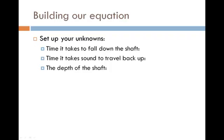Now that we understand a little bit more about our problem, we can actually start setting up our unknowns. So one of our unknowns is the time it takes for this screwdriver to fall all the way down the shaft. I'm going to call that T1. Another unknown is the time it takes for the sound to travel all the way back up. I'm going to call that one T2. And the last unknown deals with the actual depth of the shaft. Just for simplicity, I'll just call this D.